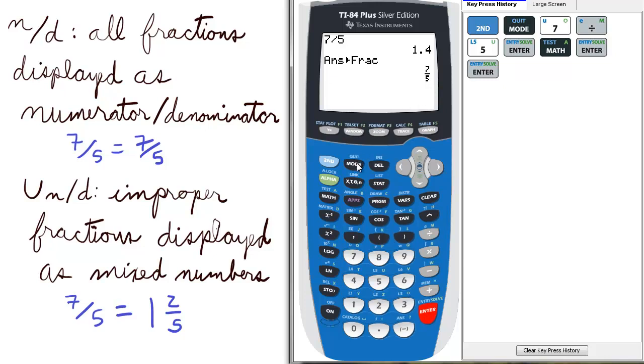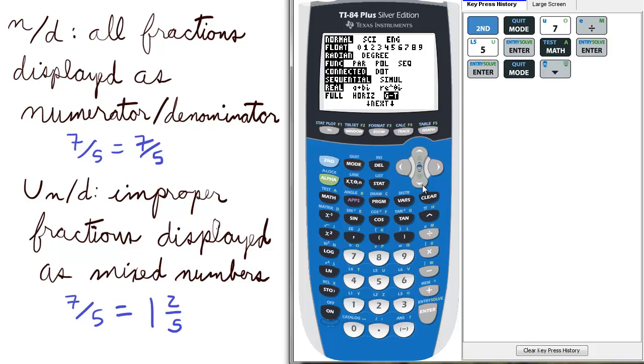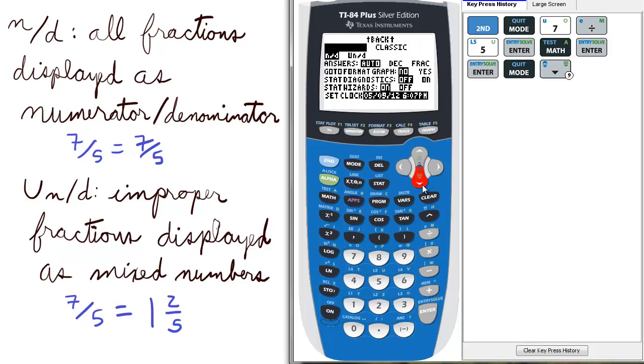Now let us go back to mode and we will scroll down to the second page, second line. And we can select u n d and press enter.